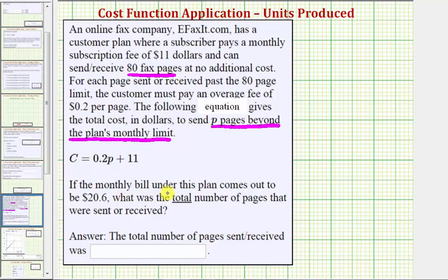So we're asked if the monthly bill under this plan comes to $20.6 or $20.60, what was the total number of pages that were sent or received? So to answer this question, we'll substitute 20.6 for c and solve for p.